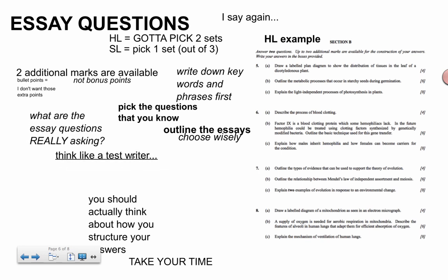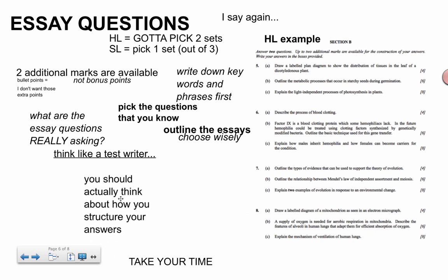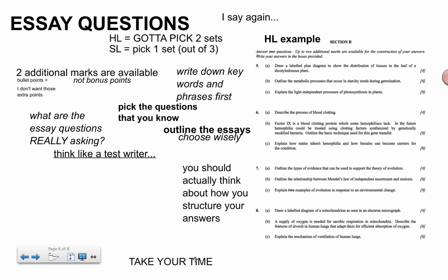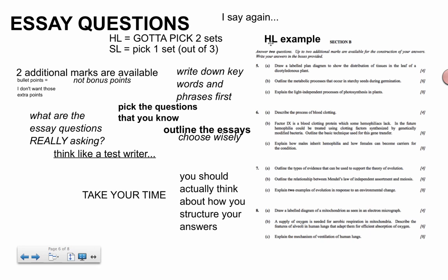Think like a test writer. Remember, the content has not changed for many, many years, decades, and they need to keep trying to come up with different ways to ask the same question. For the most part, a lot of them will be pretty straightforward. Explain the light-independent processes of photosynthesis in plants. Just make sure you're actually writing about photosynthesis and you're not writing about the Krebs cycle and cellular respiration. Take your time with it. You have the potential to score a lot of points because you can actually take your time and choose what you know best. So go for it.